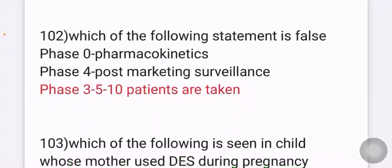Next question: which of the following statement is false regarding clinical trials? Phase 0 is to detect pharmacokinetics, phase 4 is post-marketing surveillance. The wrong answer is that phase 3 takes 5 to 10 patients — in reality, phase 3 involves many more patients.